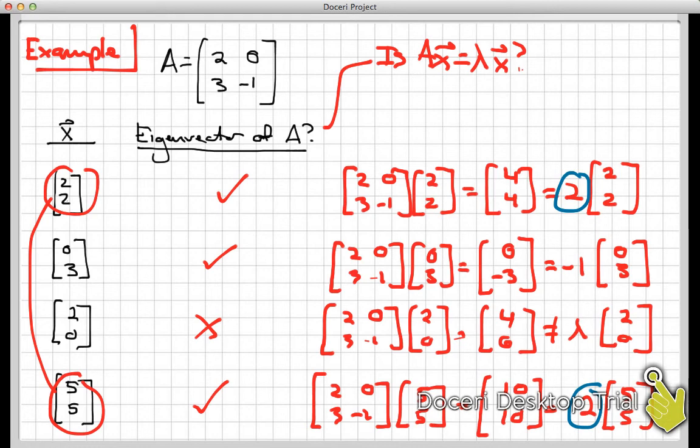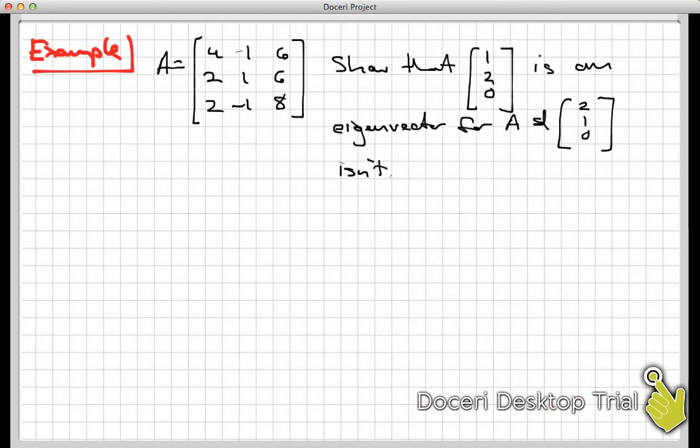But, lastly, I wanted to do one more, a little bit more expansive example here with a 3 by 3 matrix. So I have this 3 by 3 here, and I want to show that (1,2,0) is an eigenvector for that matrix A, and that (2,1,0) is not. Okay, this is no different process than we have been seeing before, so let's just set it up.